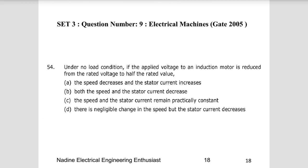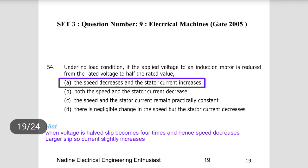Ninth question: under no-load condition, if the applied voltage to an induction motor is reduced to half the rated value, what happens? The stator current will increase, because for the same minimum magnetizing current requirement, reducing voltage causes the motor to draw more current. The speed will also drop — reducing voltage to half increases the slip to four times, hence speed decreases. Stator current increases due to the higher slip. Choice A is the right answer.